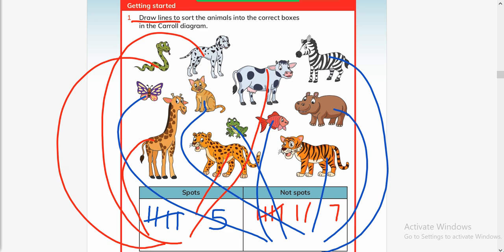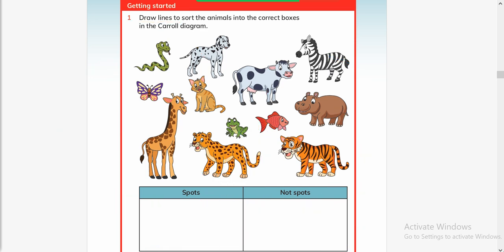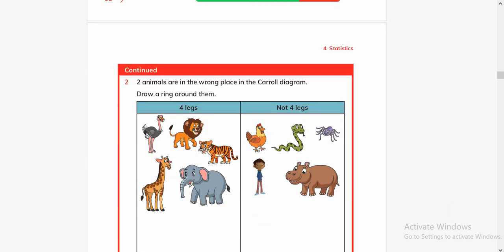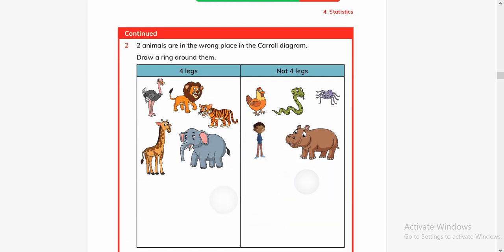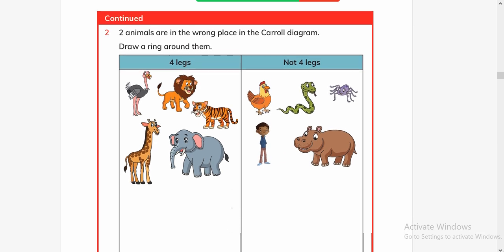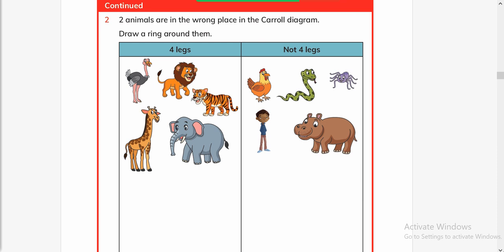So let's see what is on the next page. Two animals are in the wrong place in the Carroll diagram. Draw a ring around them. Okay, what is the heading? It is written 'four legs'. So this animal has four legs, it is four legs, it is four legs, it is four legs. Now this ostrich - draw a ring around the animal that is at the wrong place. So ostrich is at the wrong place. He doesn't have four legs, so we'll circle it.